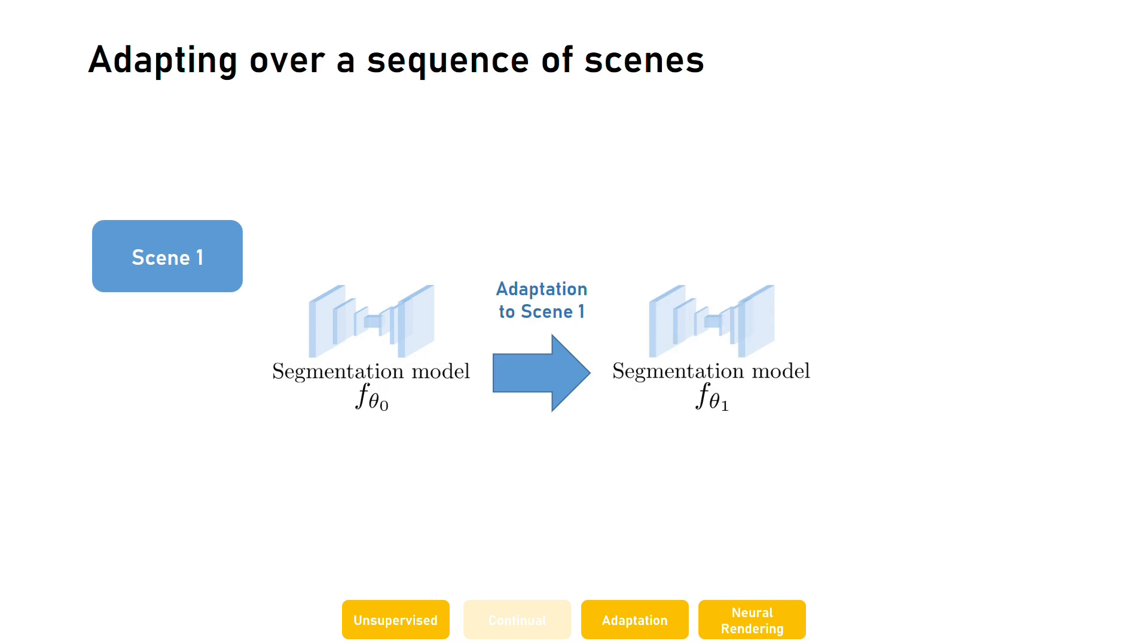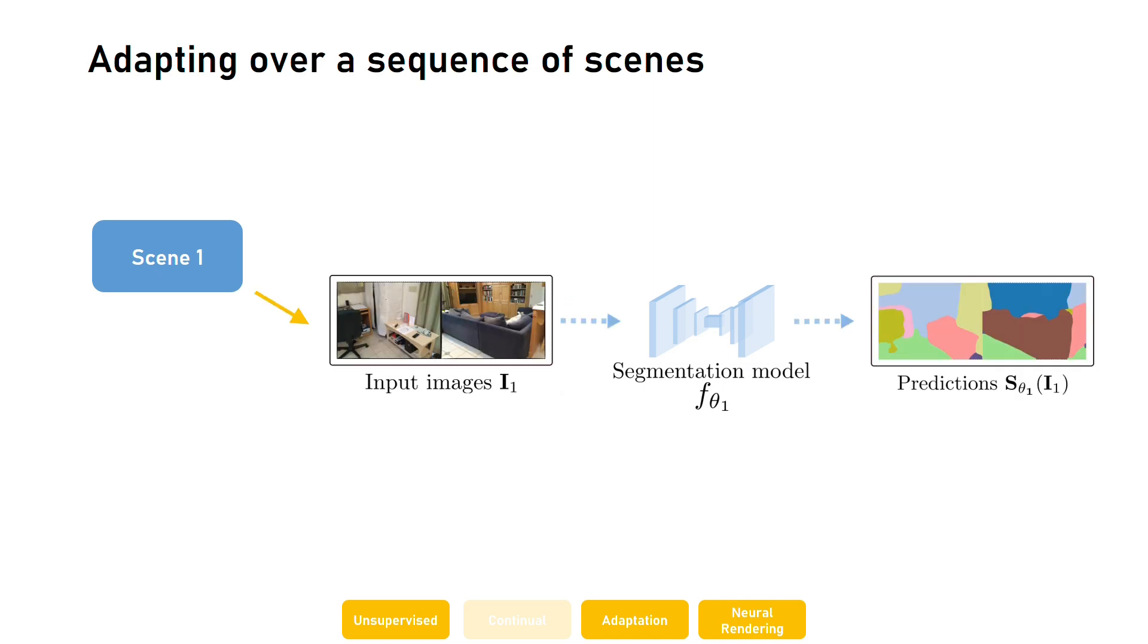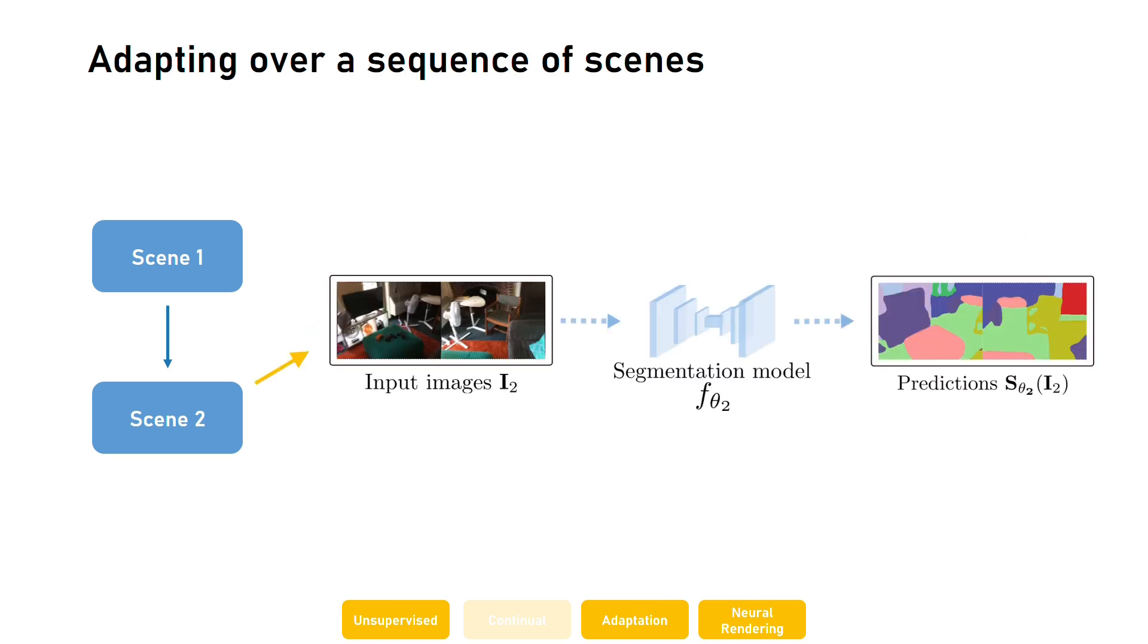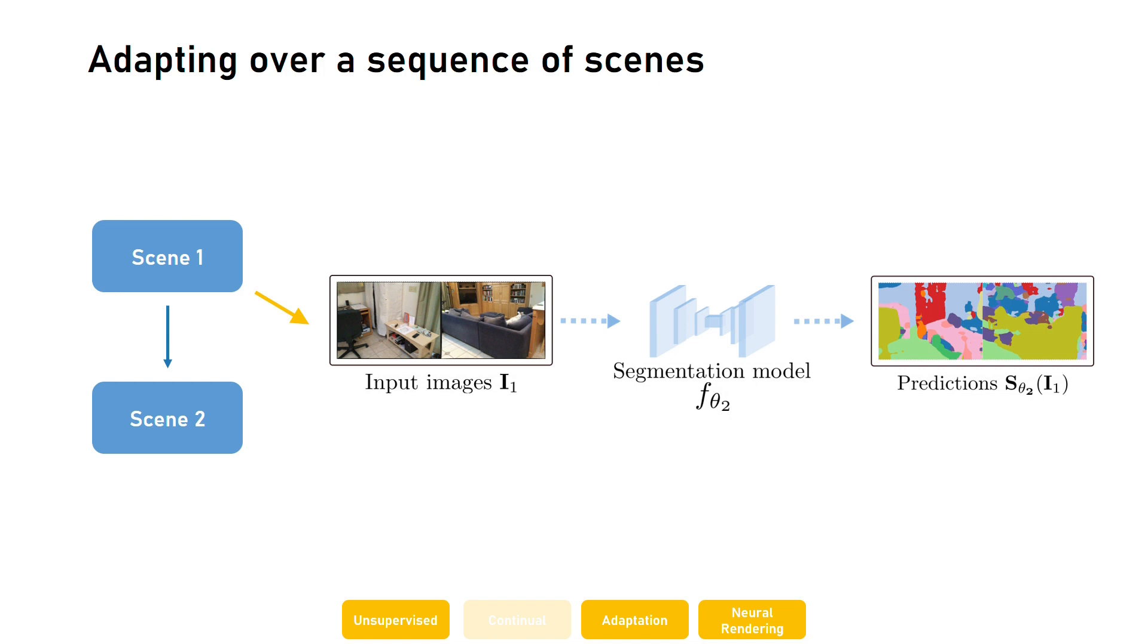Adaptation to scene number 1 will produce an updated version Fθ1 of the model. When testing the new model on the data from the adaptation scene, the predictions correctly capture the semantic content of the scene. However, when adapting Fθ1 on scene number 2, thereby obtaining a new model Fθ2, while the predictions of the new model on scene number 2 approximate well the semantic content of the scene, this is no longer the case for the predictions of the new model on scene number 1. This phenomenon is known in the literature as catastrophic forgetting.